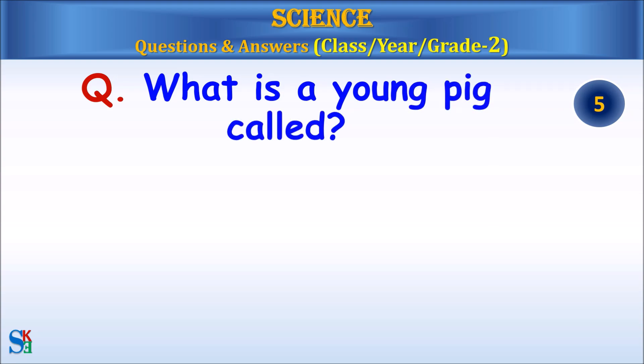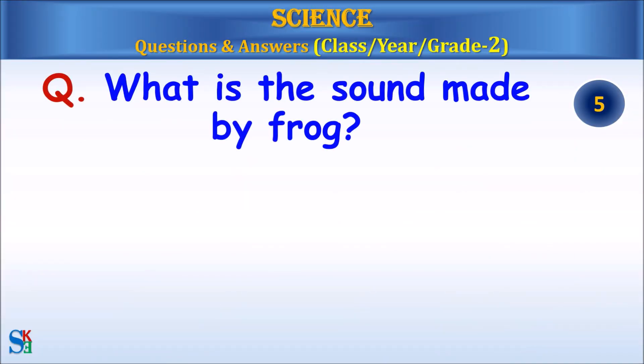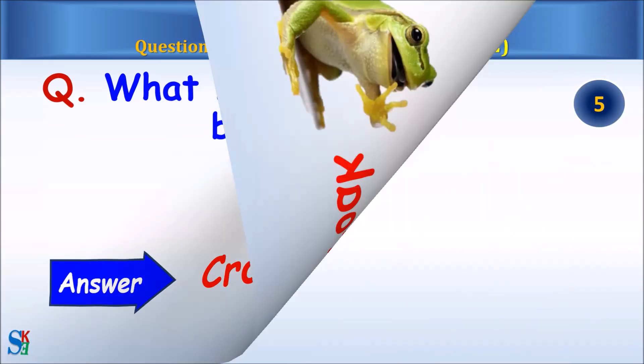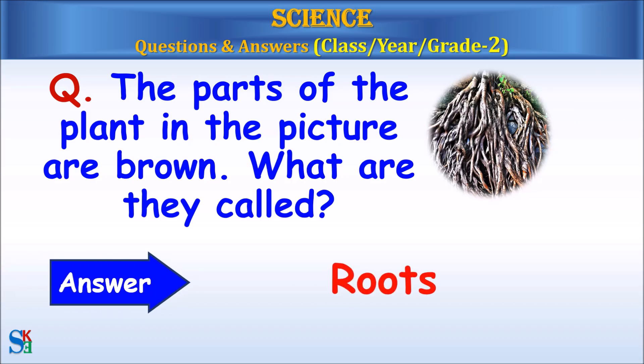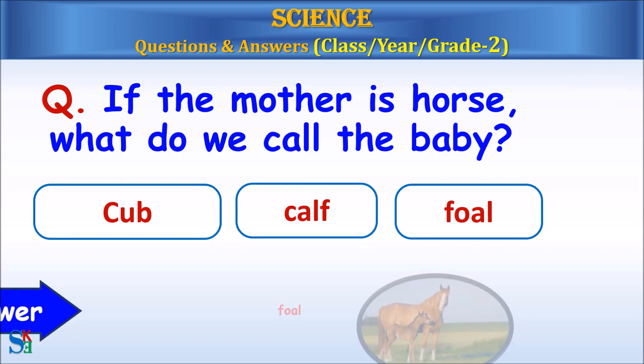What is a young pig called? Answer, piglet. What is the sound made by frog? Answer, croak, croak. The parts of the plant in the picture are brown. What are they called? Answer, roots. If the mother is horse, what do we call the baby? pup, calf or foal? Answer, foal.